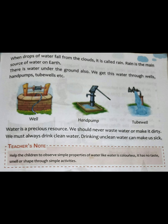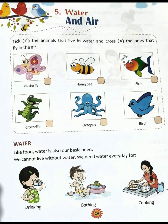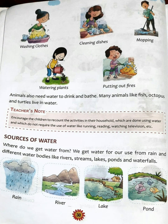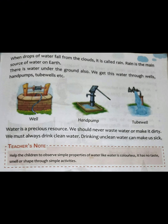Now let us discuss your homework. Today's homework: read book page number 29 and complete the given exercise. Then read pages 30 and 31, underline the difficult words, and learn their spellings. Read the chapter at least two times. Thank you and bye-bye.